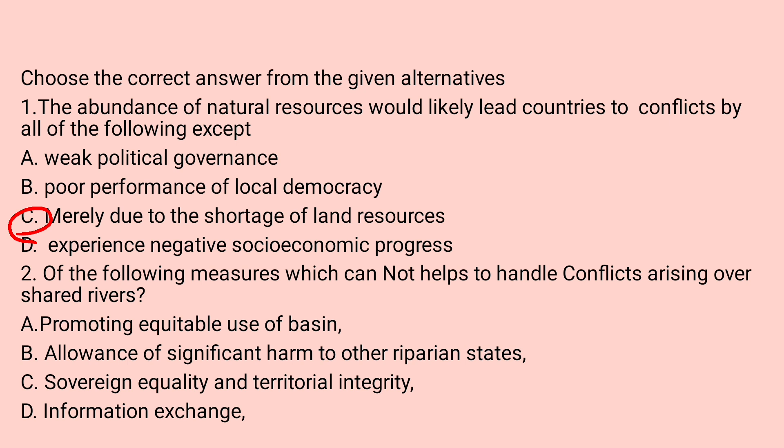Question number two: which of the following measures cannot help us handle conflicts arising over shared rivers? A: promoting equitable use, B: allowance of significant harm to other riparian states, C: sovereign equality and territorial integrity, D: information exchange. Allowance of significant harm to other riparian states is not helpful for handling conflicts among riparian countries — so B is the answer.